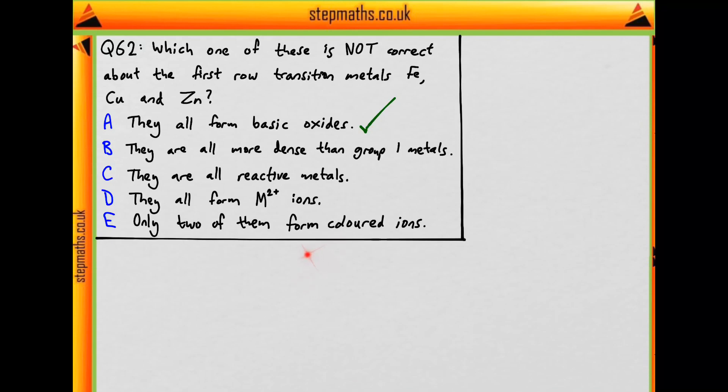Now secondly, we're told that they're all more dense than group 1 metals. Would this make sense? Well, what is density? That's the mass per unit volume. So how many atoms can we squeeze into a certain volume for group 1 metals and the transition metals? Well, that depends on the size of the atoms.